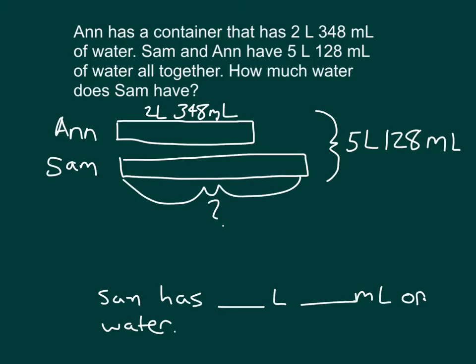Now, if we just thought about this with simpler numbers, and together they had 5, and Ann's had been 2, what would we do with the 5 and the 2 to figure out Sam's? Did you say subtract?